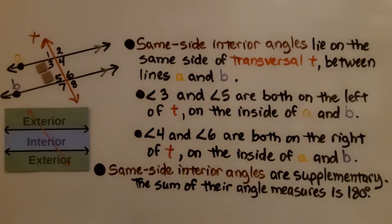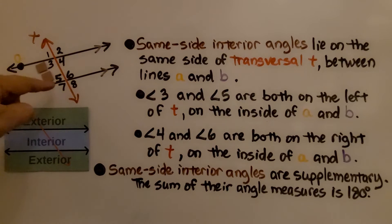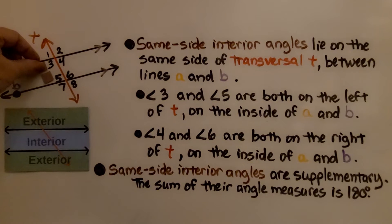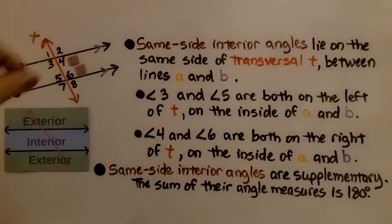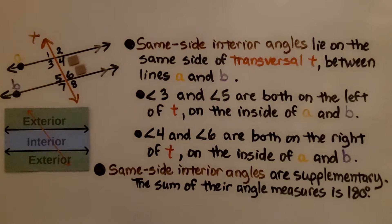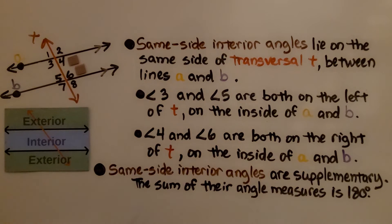Same side interior angles lie on the same side of transversal T between lines A and B. Angles 3 and 5 are both on the left of T on the inside of A and B. Angle 4 and angle 6 are on the right side of T on the inside of A and B — they are same side interior angles. Same side interior angles are supplementary; the sum of their angle measures is 180 degrees. You can remember this because SS stands for supplementary.